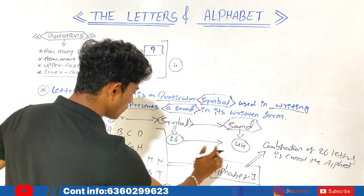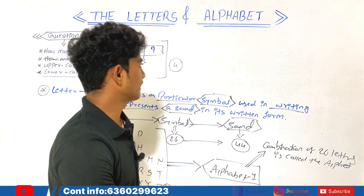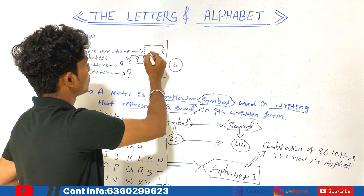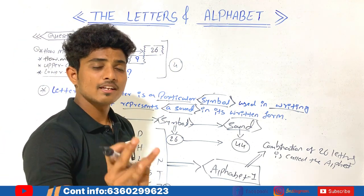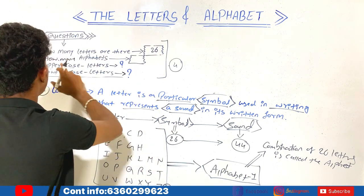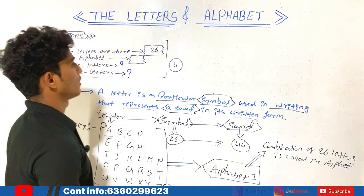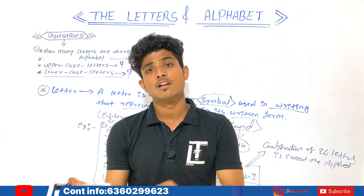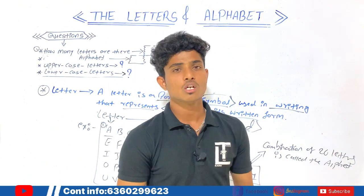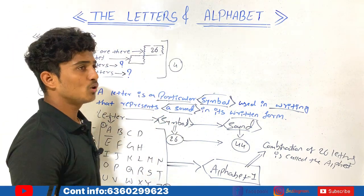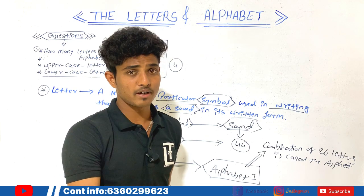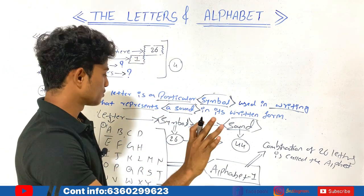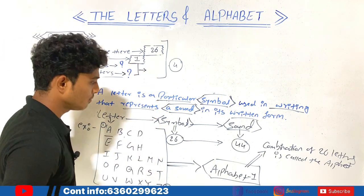I hope you understood what is a letter, what is a symbol, what is sound, how many letters there are, and how many alphabets there are. You got the answer to the first question: we have a total of 26 letters. The answer to the second question — how many alphabets are there — is that there is only one alphabet. Those who thought there are 26 alphabets are 100% wrong. The exact answer is: there is only one alphabet in the English language.